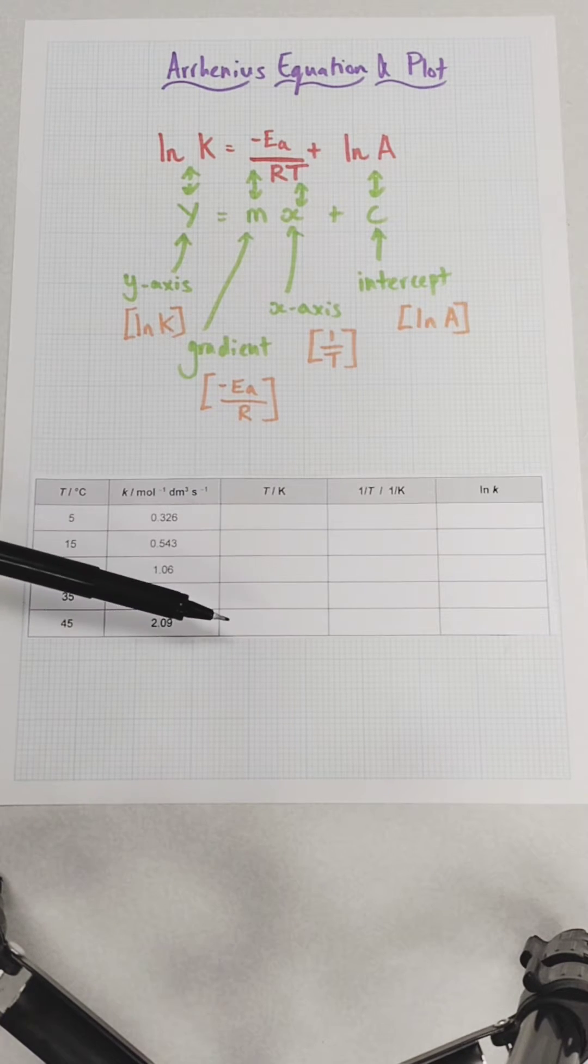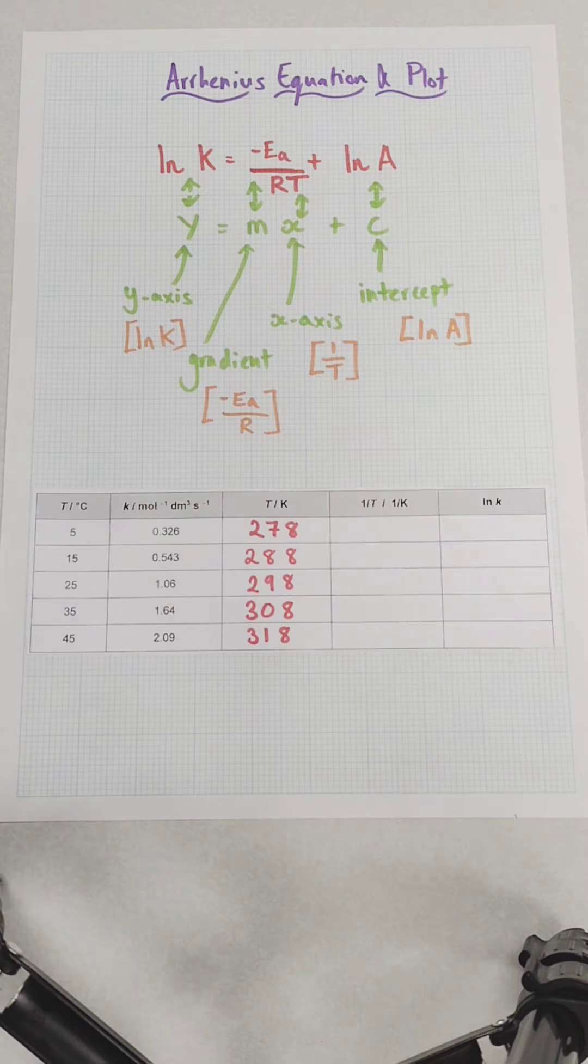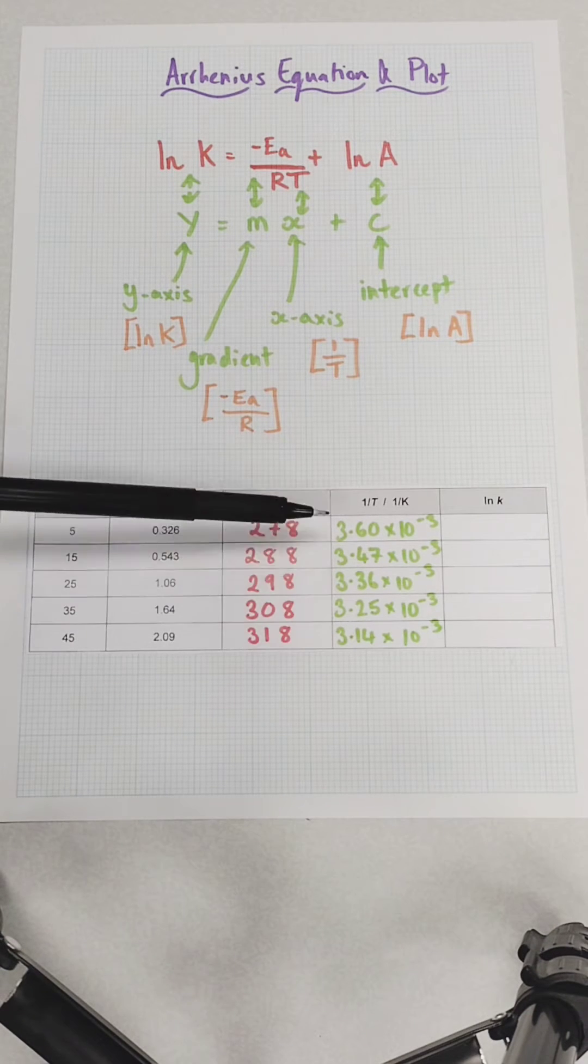First, you need to convert temperature in degrees centigrade into temperature in Kelvin by adding 273 to every centigrade value. Then you do 1 over those temperatures to produce the values you're going to plot on the x-axis.